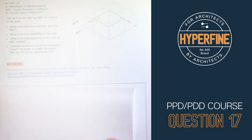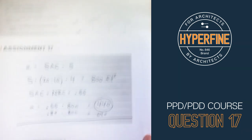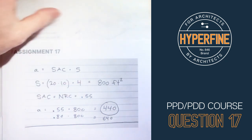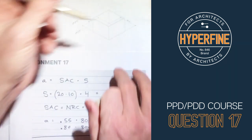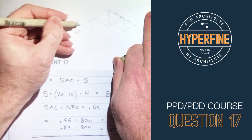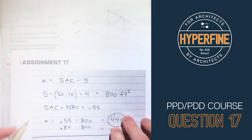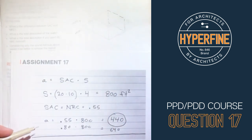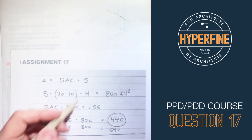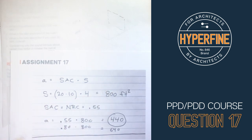The next part asks: what is the total absorption of the walls? Using the formula, total absorption equals SAC times S (area of the walls). We have four walls, each 20 feet wide by 10 feet tall, giving 20 × 10 × 4 = 800 square feet. With NRC = 0.55 used as the SAC, absorption equals 0.55 × 800 = 440 sabins.